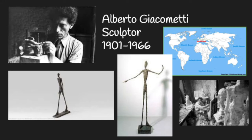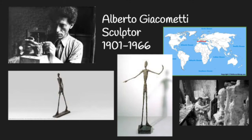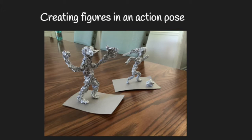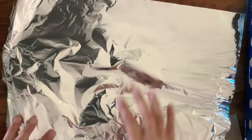This week our lesson is about how parks and recreation is active, so we're going to create sculptures showing a figure in motion or in action. Supplies you'll need — hopefully things you have around the house — are aluminum foil, scissors, marker, cardboard, and a hot glue gun or tape. Here are some examples: I've got a girl chasing a soccer ball and a boy playing baseball.